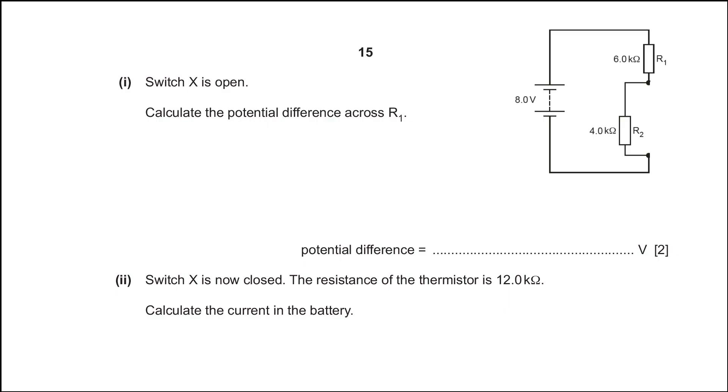Now, come back to question. Use the potential divider rule, substitute the values. After solving, result is 4.8 volts.